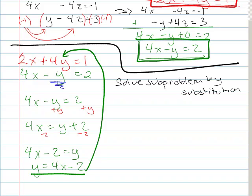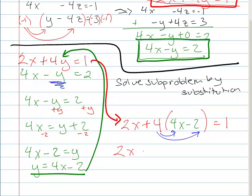So this over here becomes 2X plus 4 and instead of Y I'm going to put 4X minus 2 and that's equal to 1. So I'm gonna be super duper careful to distribute that across when I get to that point.